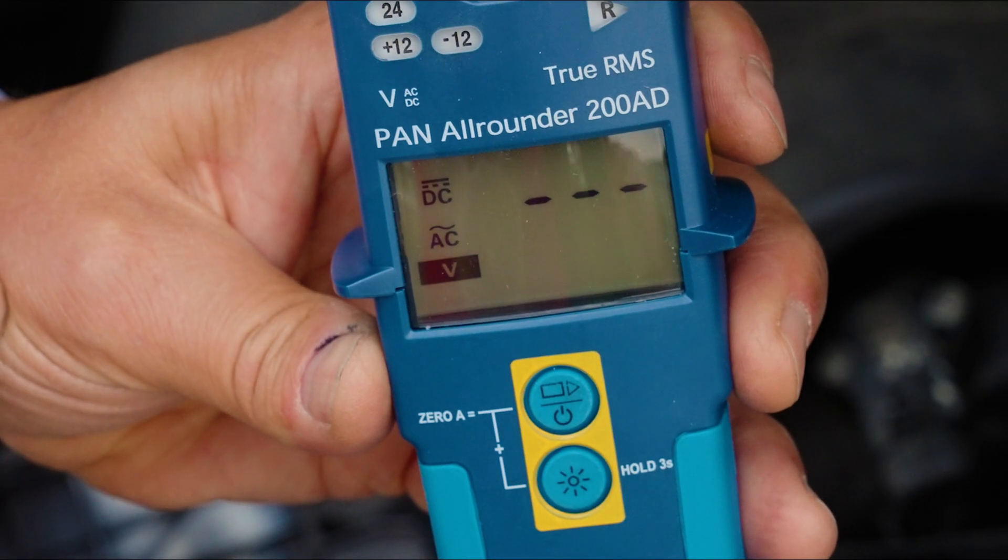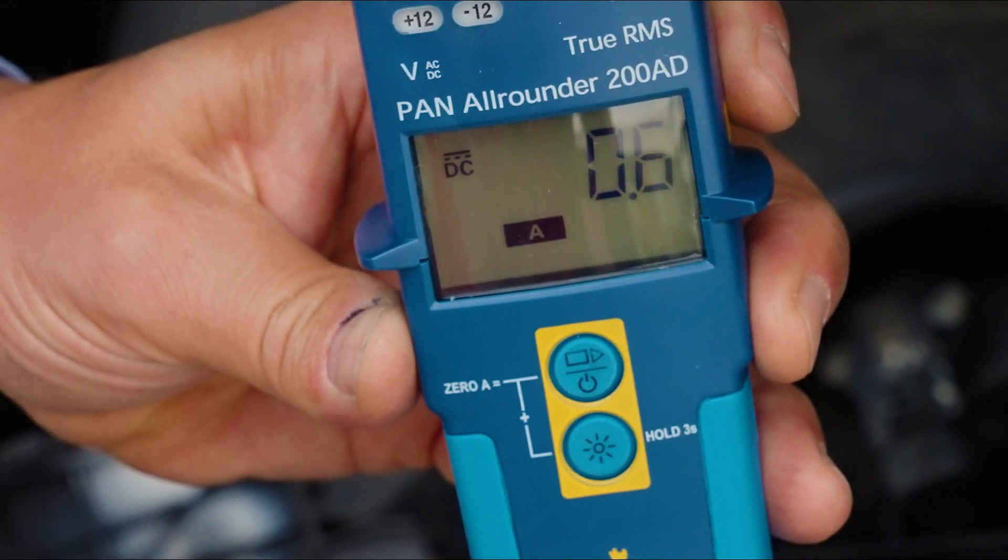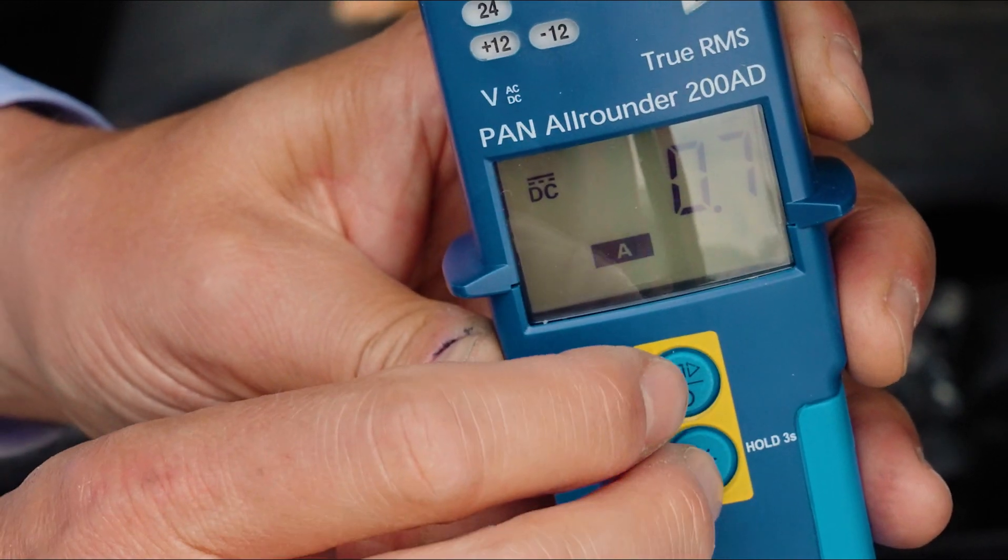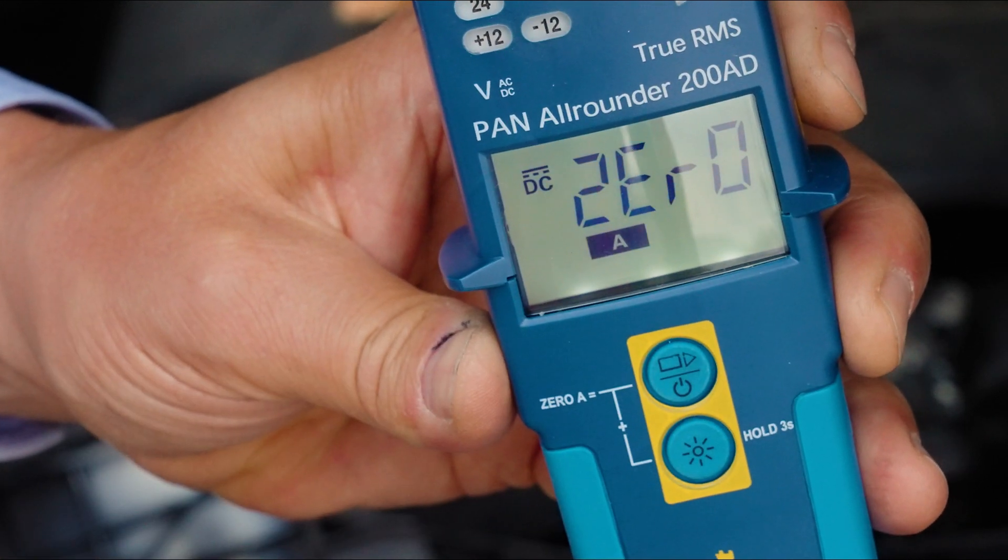In order to measure the battery current, touching the operating button once activates the current mode. In case the display shows a different value than 0, it can be set to 0 by pressing both buttons for 3 seconds.